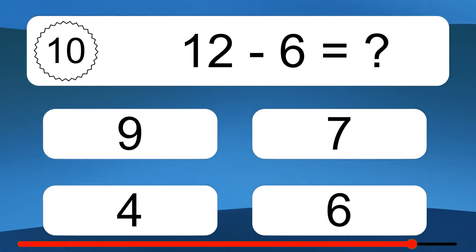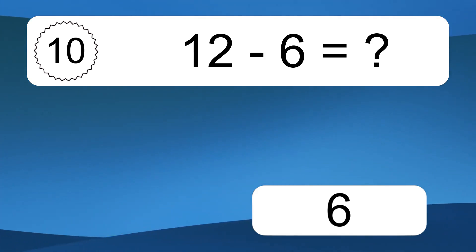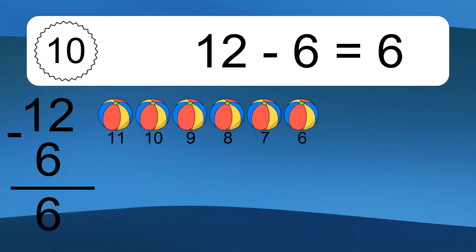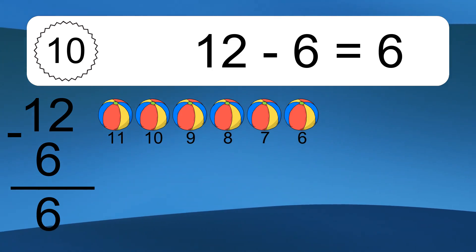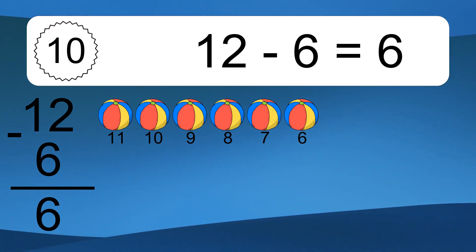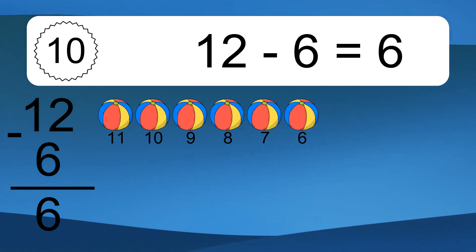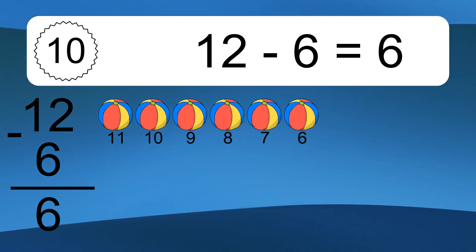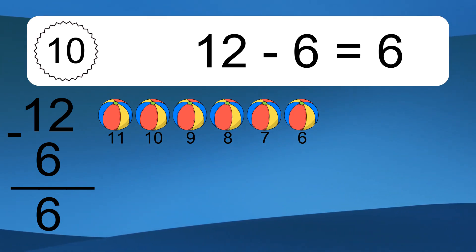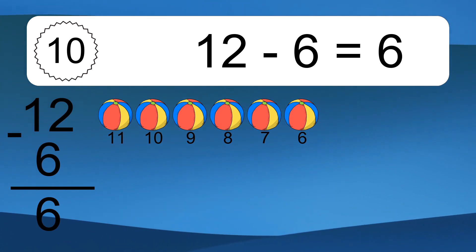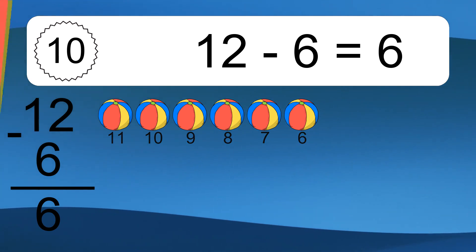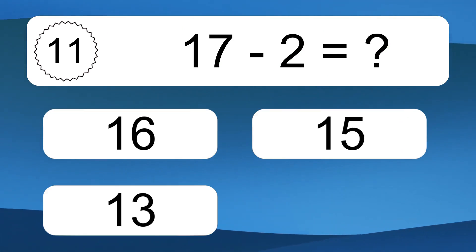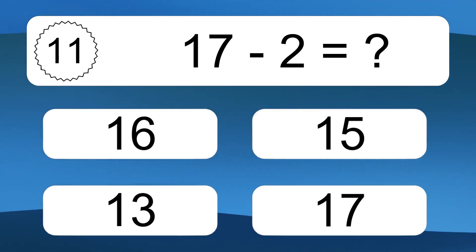12 minus 6 equals 6. Let's count it. 11, 10, 9, 8, 7, 6. 17 minus 2 equals what?